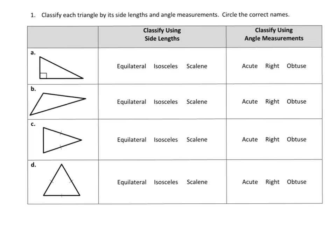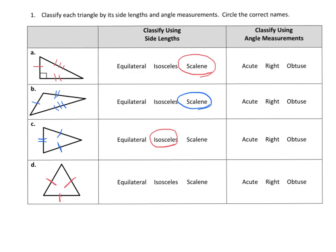Let's put this into practice. First, we're going to classify each triangle by their side lengths. This one looks like three different side lengths with no matches — that makes it scalene. This one also looks like all three are different — scalene. This triangle has dashes on two sides and nothing on the third, so two sides are the same and one is the oddball — that makes it isosceles. And this one has dashes on all three sides — that makes it equilateral.